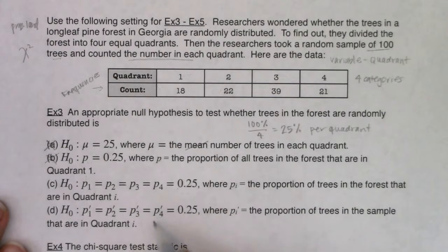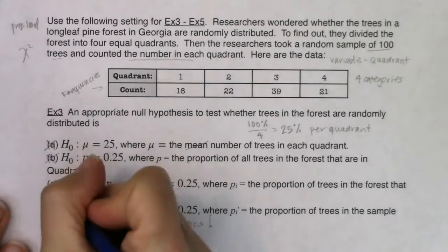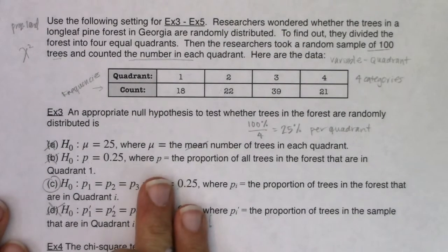And again, these are statistics. That p prime represents sample data. And we never want sample data in our null hypothesis, so c is going to wind up being our answer. So with that, we've got our null proportion now.